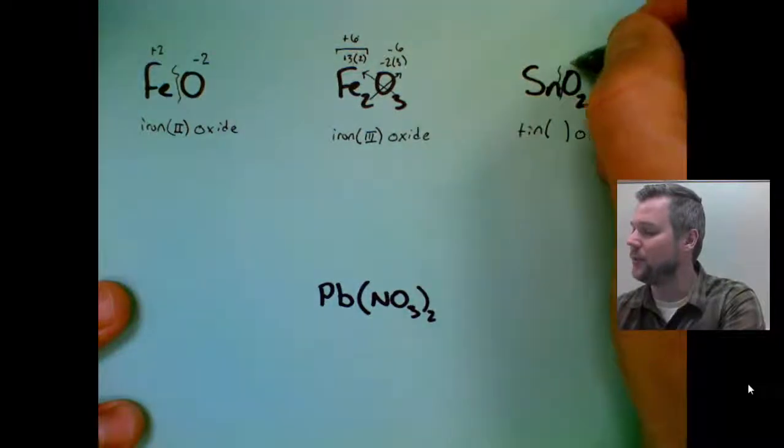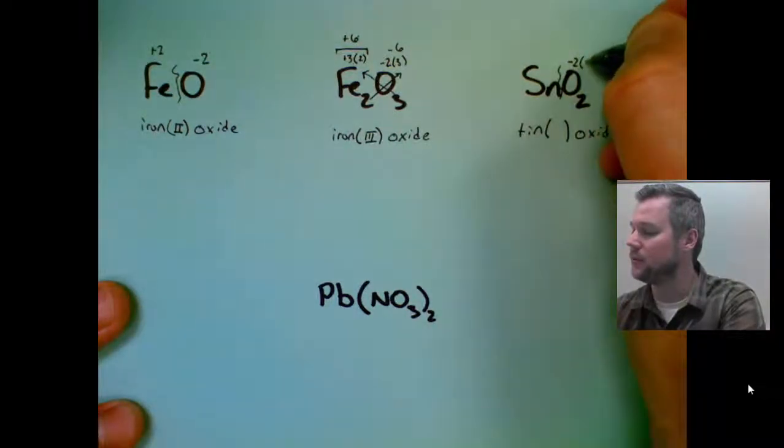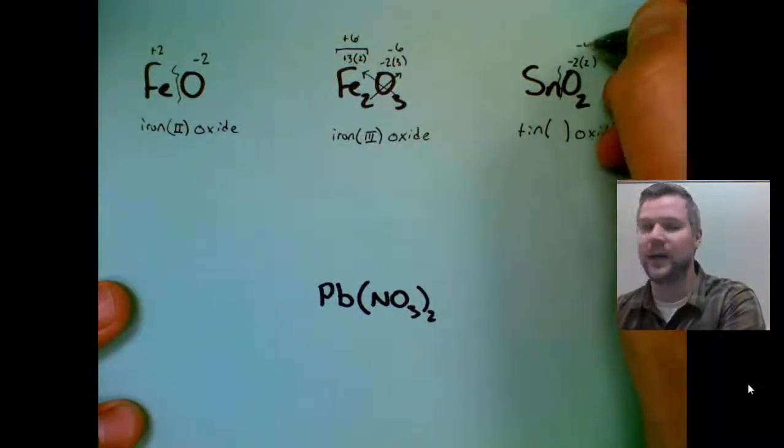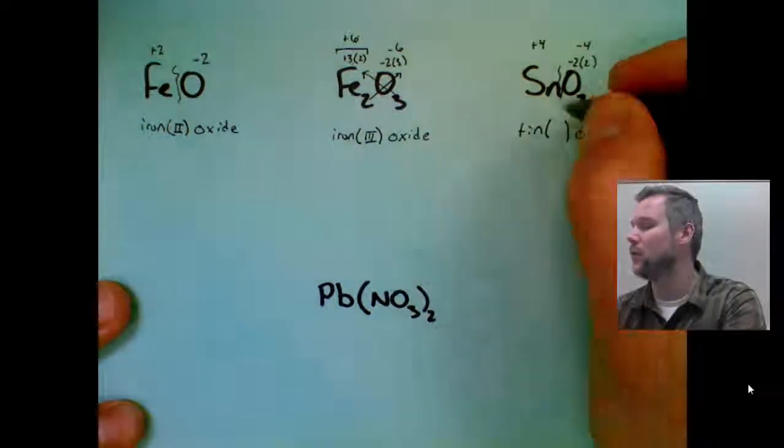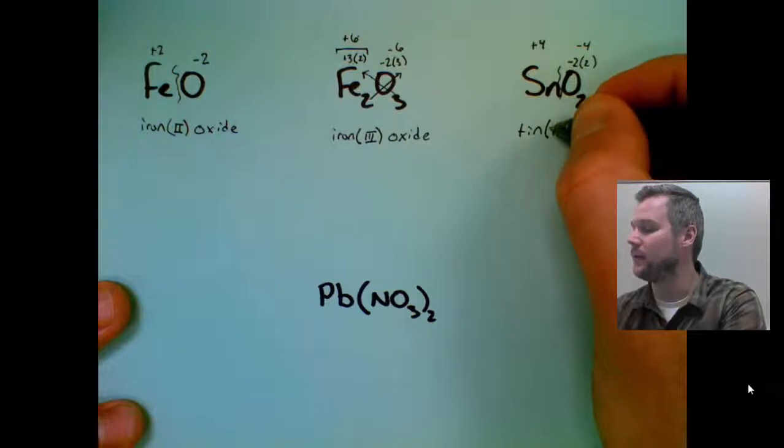We know that oxide is minus two. We've used it a couple times. There's two copies, which makes minus four total negative, and that means I need to have equal and opposite positive. So four, so this is tin four, IV.